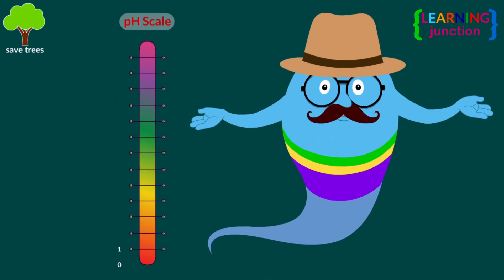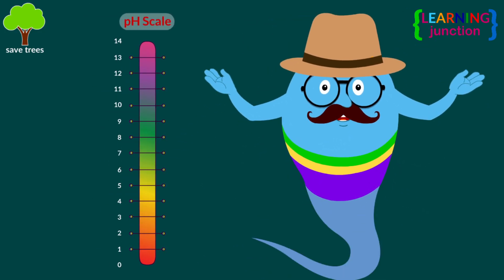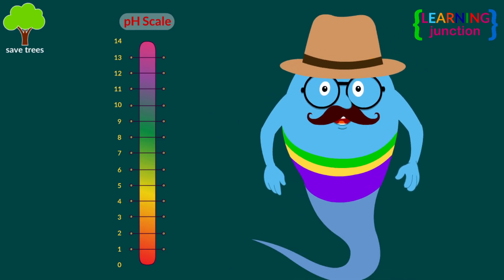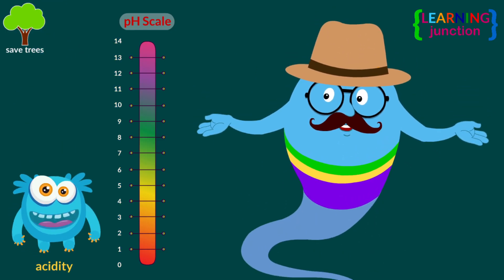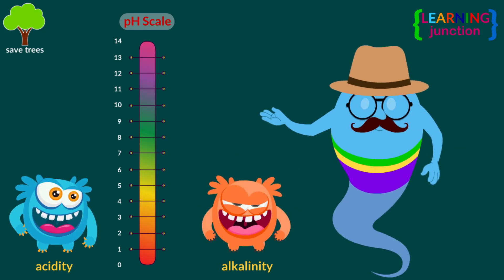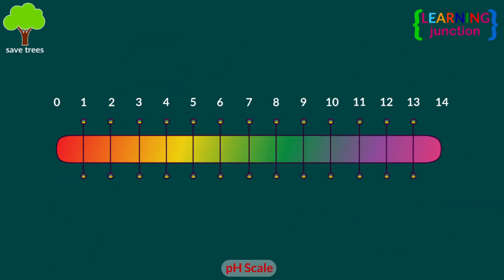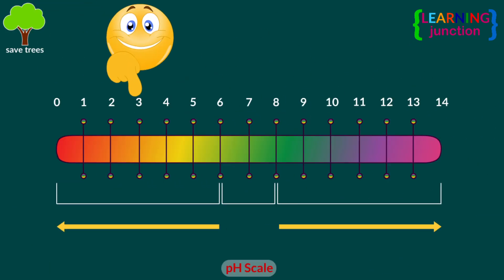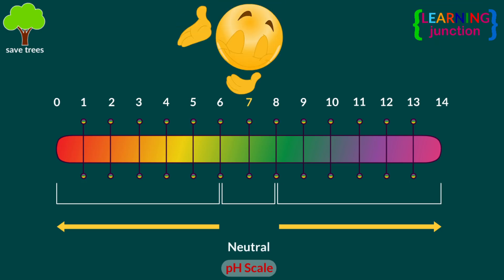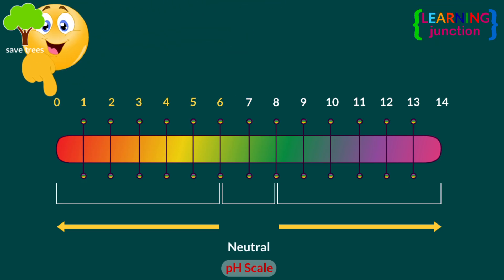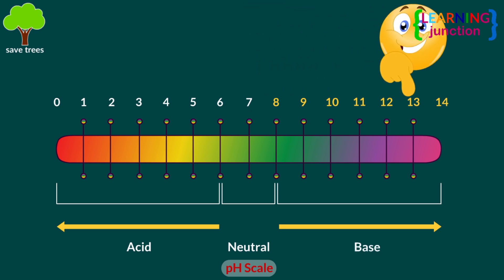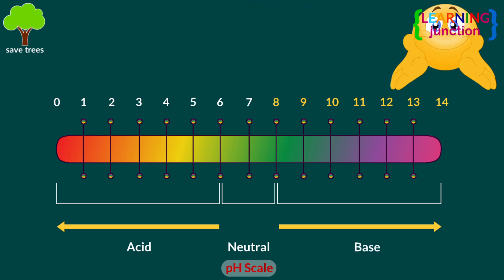Look at this pH scale. The pH scale is a numerical scale ranging from 0 to 14 that calculates the acidity or alkalinity of a solution. The pH scale ranges from 0 to 14, with 7 being neutral. Values below 7 are acidic, and values above 7 are alkaline or basic.